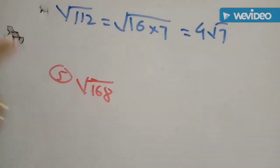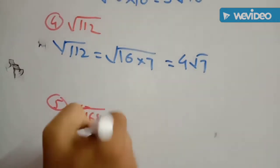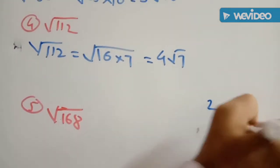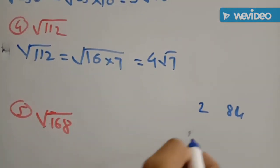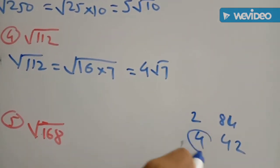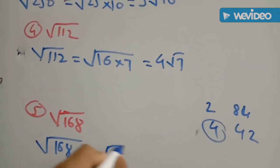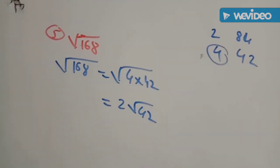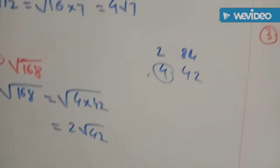Root of 168: divide by 4 — 168 equals 4 into 42. Square root of 4 is 2, giving 2 root of 42. This is the simplification of the given SIRDs.